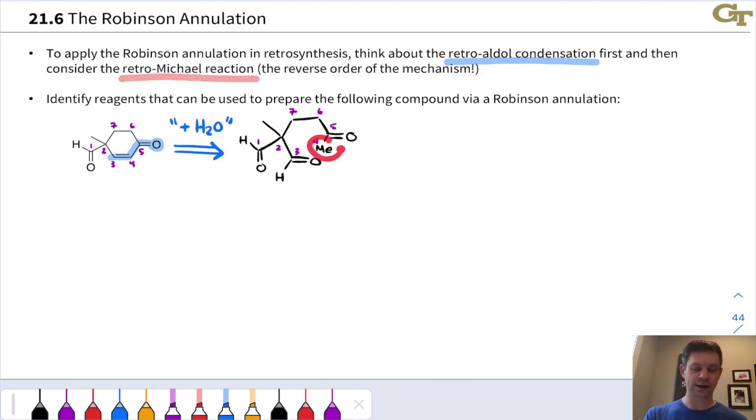Imagine in the forward direction, an enolate forming here, adding in, kicking up, and that would lead ultimately to aldol condensation. And now we can notice that we have now one, two, three, four, five, a 1,5-dicarbonyl structure in the starting material for the aldol condensation.